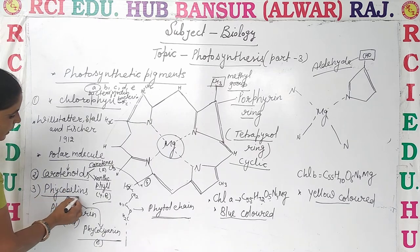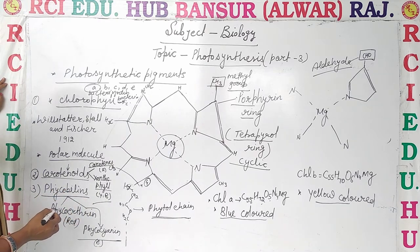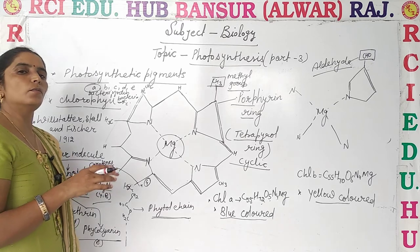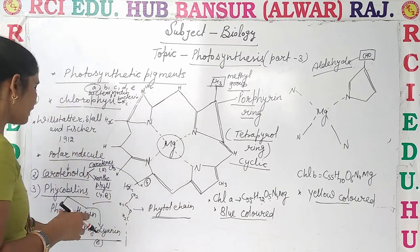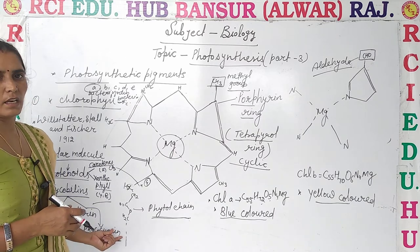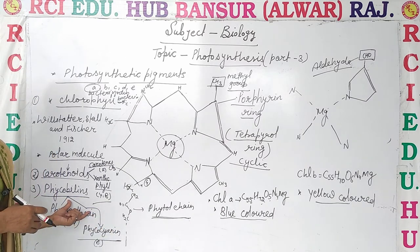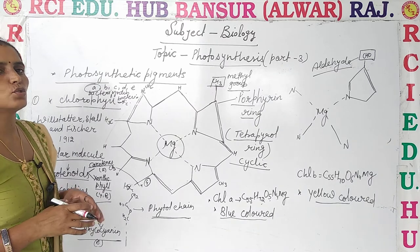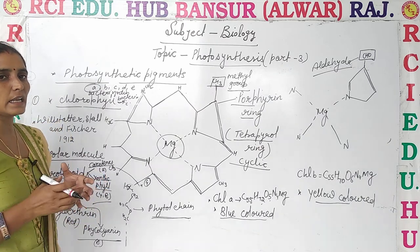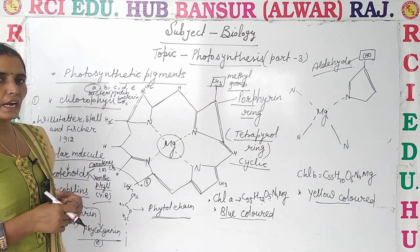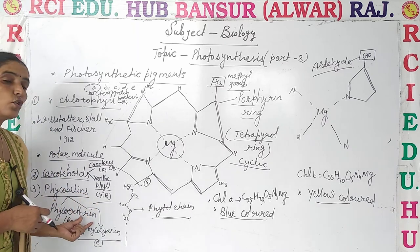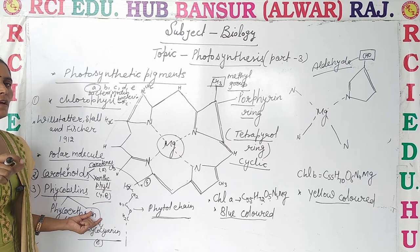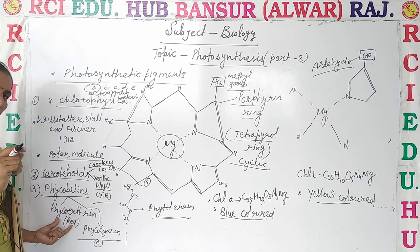The third type of pigment is phycobillins. Phycobillins are also divided into two parts: phycoerythrin and phycocyanin. Due to the presence of phycoerythrin, the color of red algae is red.